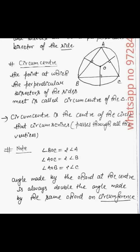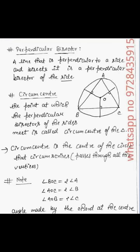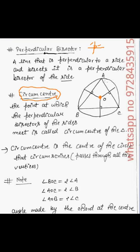Now we will move to our next type of center. What is the perpendicular bisector? The median is the bisector of the side, but the perpendicular bisector means a perpendicular is drawn at the midpoint. Where all three perpendicular bisectors meet, that point is called the circumcenter. The circumcenter is the center of a circle passing through all three vertices, and its radius is called the circumradius R.